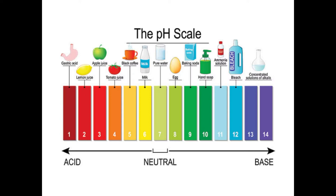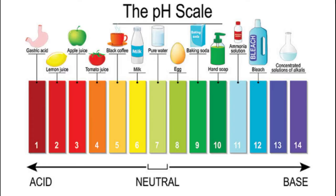Now this is a pH scale. In pH, we have to concentrate on hydrogen ions. If the hydrogen ions are present in large numbers, then acidic nature is increasing. From 0 to 7, hydrogen ions are increasing, so this is called acidic nature increasing. From 7 to 14, hydrogen ions are decreasing, so this is called basic nature increasing.